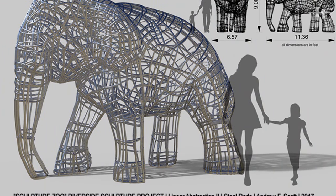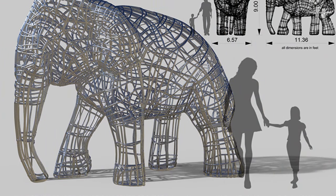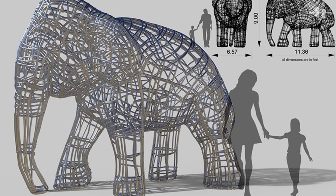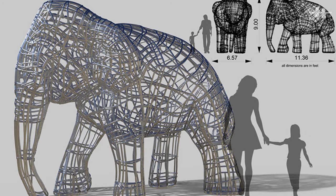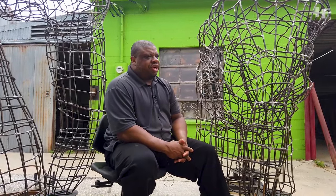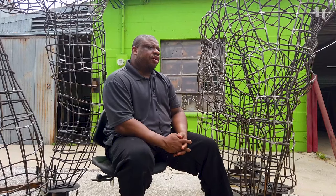The title of the works is 'Linear Abstractions' and they represent a linear abstraction of an African elephant. The works are a continuation of my interest in using African art and African subject matter, recontextualizing it in a modern context to bring it into a more universal form of expression.